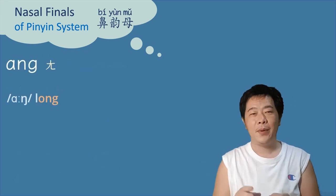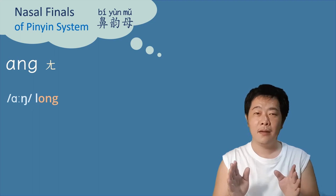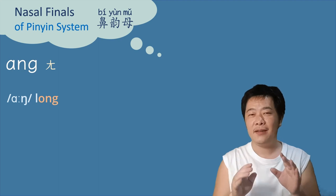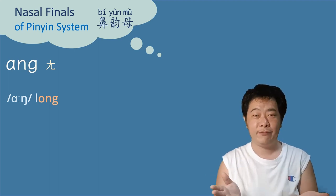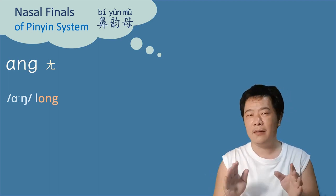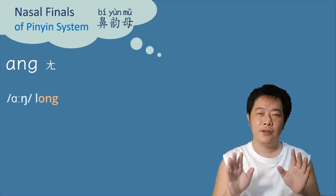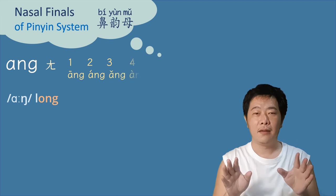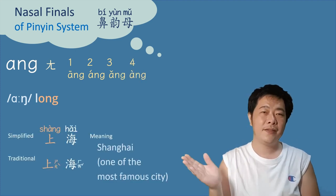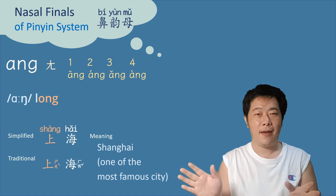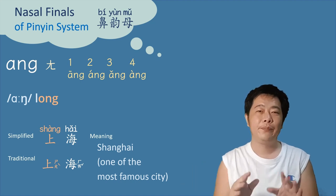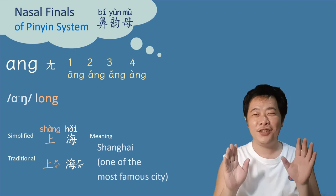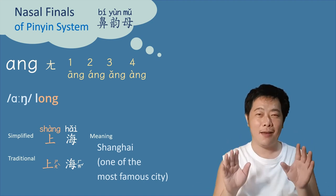昂 spelled A-N-G (ang) works totally differently from A-N (an). It sounds the same as the 'ang' in 'lang.' Tones: āng, áng, ǎng, àng. Example: 上海 (Shànghǎi) — the famous city. So no longer say 'Shang-high' please — it's Shànghǎi.